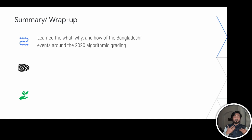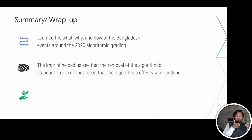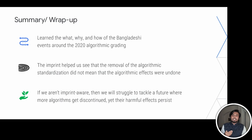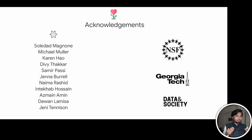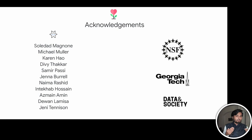Let's wrap it up with a summary. We learned three things today. First, we learned what happened in Bangladesh and why it happened. Second, the lens of the imprint helped us see how the removal of the standardization did not mean that the effects were undone. Finally, if we are not imprint-aware, then we may struggle to tackle a future where more of these algorithms get discontinued, yet their harmful effects persist. This project wouldn't be possible without the bravery and commitment of our participants. I want to share a note to them in Bengali. A special shout out to Abraar, who was a superstar community liaison. Thanks to all these individuals and organizations for their support. I hope you'll check out the paper — it has a lot more analysis and in-depth quotes. Thank you so much for watching and I look forward to seeing you at FAccT 2022.